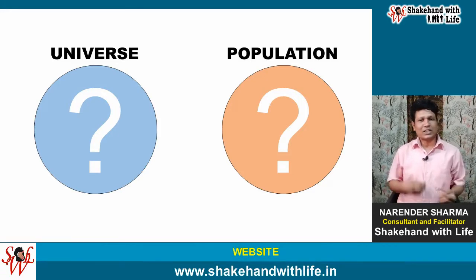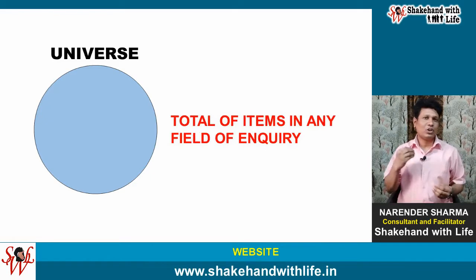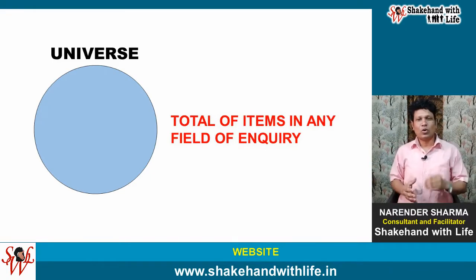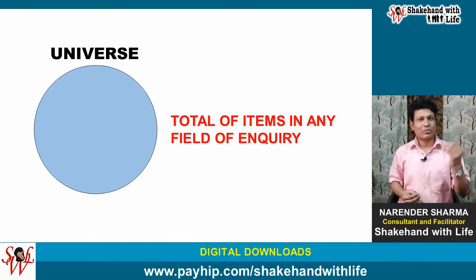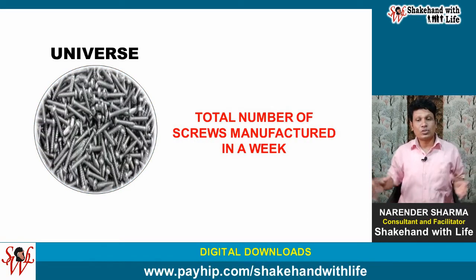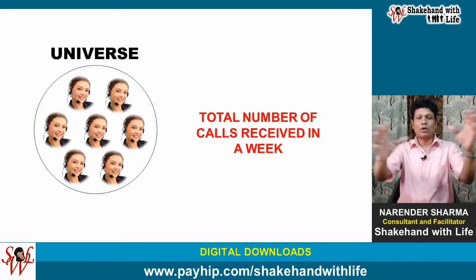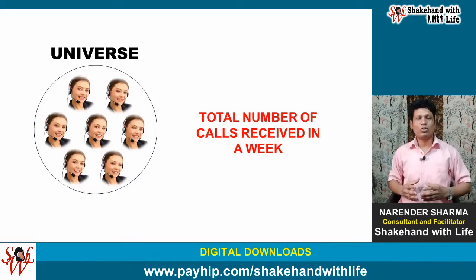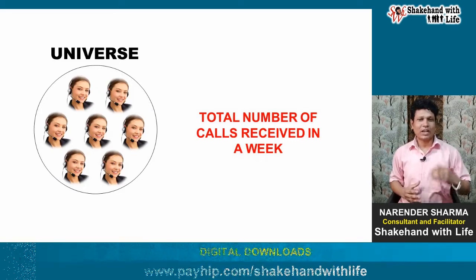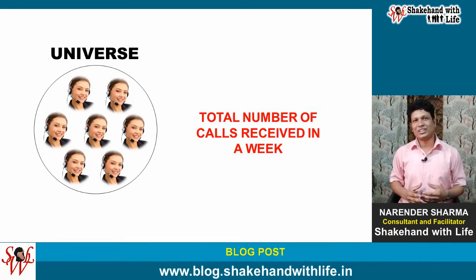From the statistical point of view, the term Universe refers to the total of the items or units in any field of inquiry. For example, the total number of screws produced by a manufacturing unit in a week constitutes the Universe, or the total number of calls received by a call center in a week can be considered as Universe.